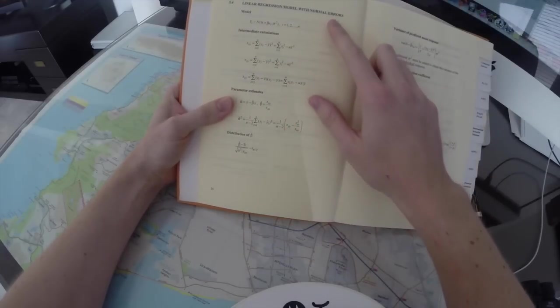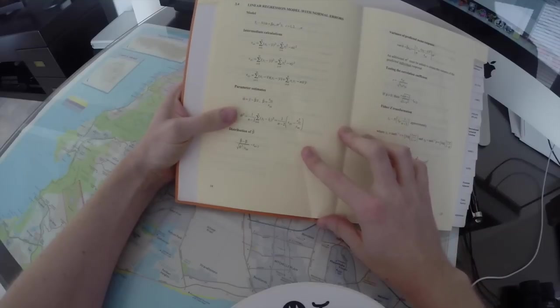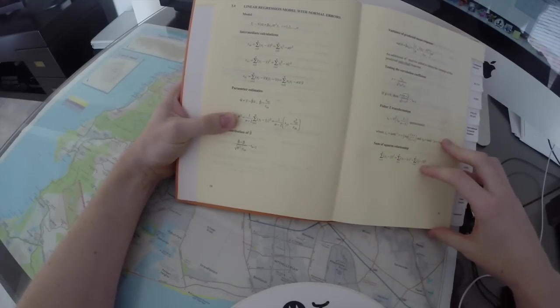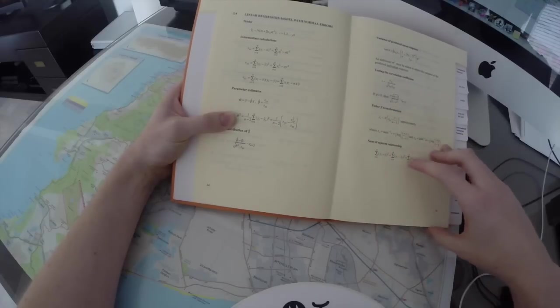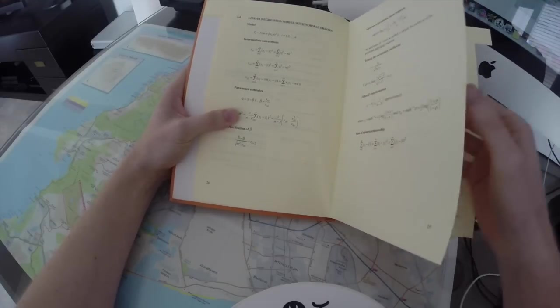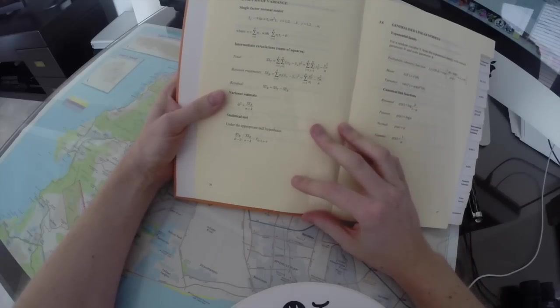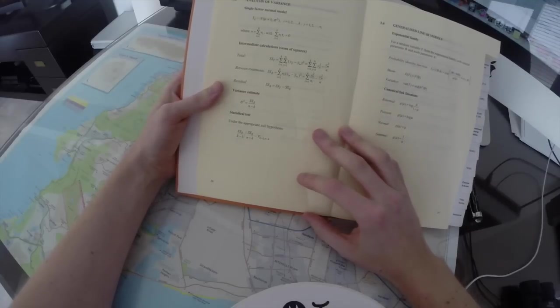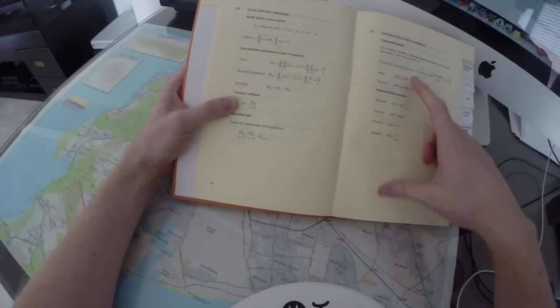Linear regression models, intermediate calculations, parameter estimations, distribution of the beta, variance of predicted means response, testing the correlation coefficient, Fisher's Z transformation, sum of squares relationship. Then we also have the analysis of variance, known as ANOVA. There's single factor normal model. There's the variance estimator. There's the canonical link functions from the whole exponential family.